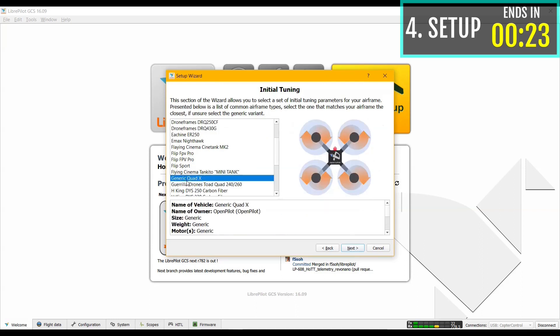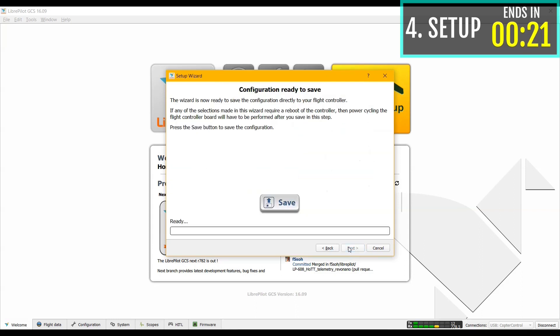Here select generic quad X. Click next and save.